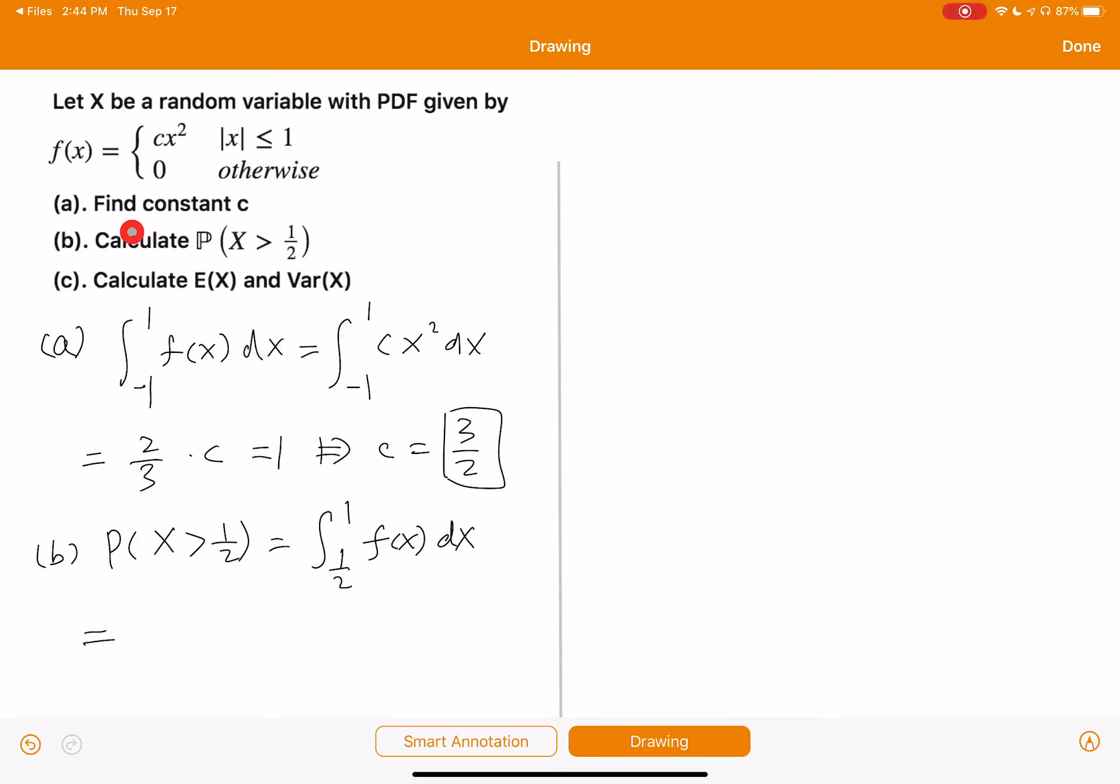And we know that f is cx squared, and we just calculated c, just plug it in. So this is one-half to one, 3 over 2 x squared dx. This is equal to 7 over 16.